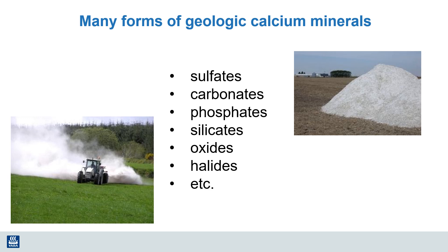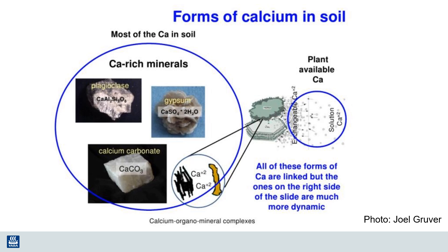Calcium is one of the most abundant elements on earth, found in many different forms. Some of the most common ones are calcium sulfate or gypsum, calcium carbonate or limestone, calcium phosphate or rock phosphate, calcium silicate, calcium oxides, calcium chloride, and many other forms. These geologic materials and rocks are the source of calcium in the environment and also the source of calcium in soils.